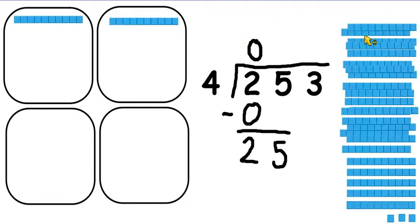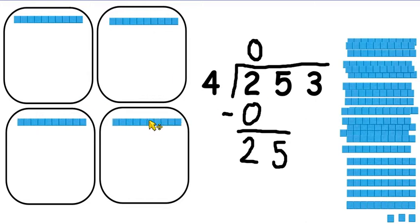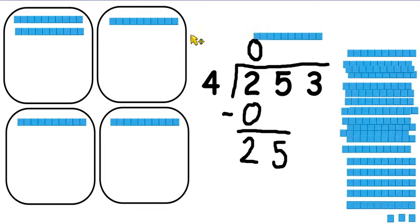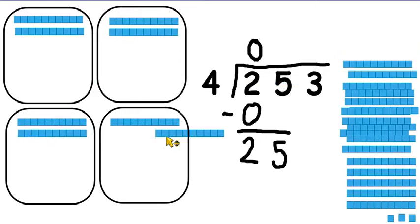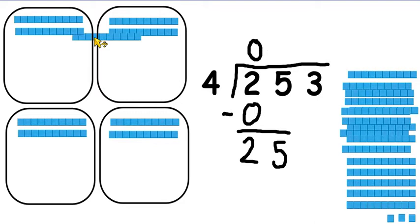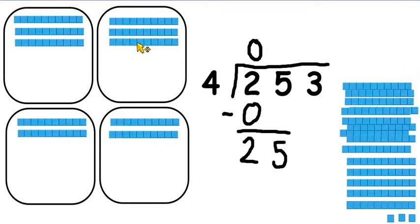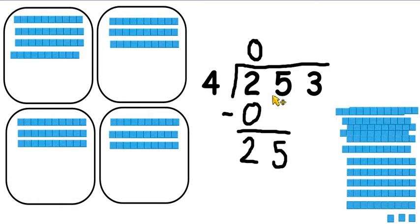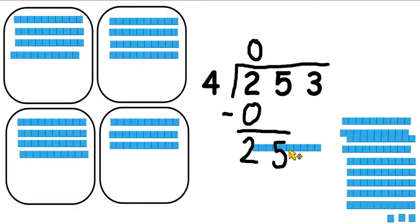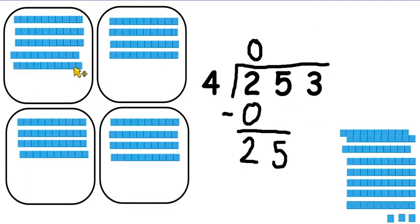Just as in simple divisions, we might do dots and circles here. We can just share those tens out. And we have to remember that we need the same amount in each because we need to make equal groups. So altogether we've got 25 tens that we're splitting between 4.